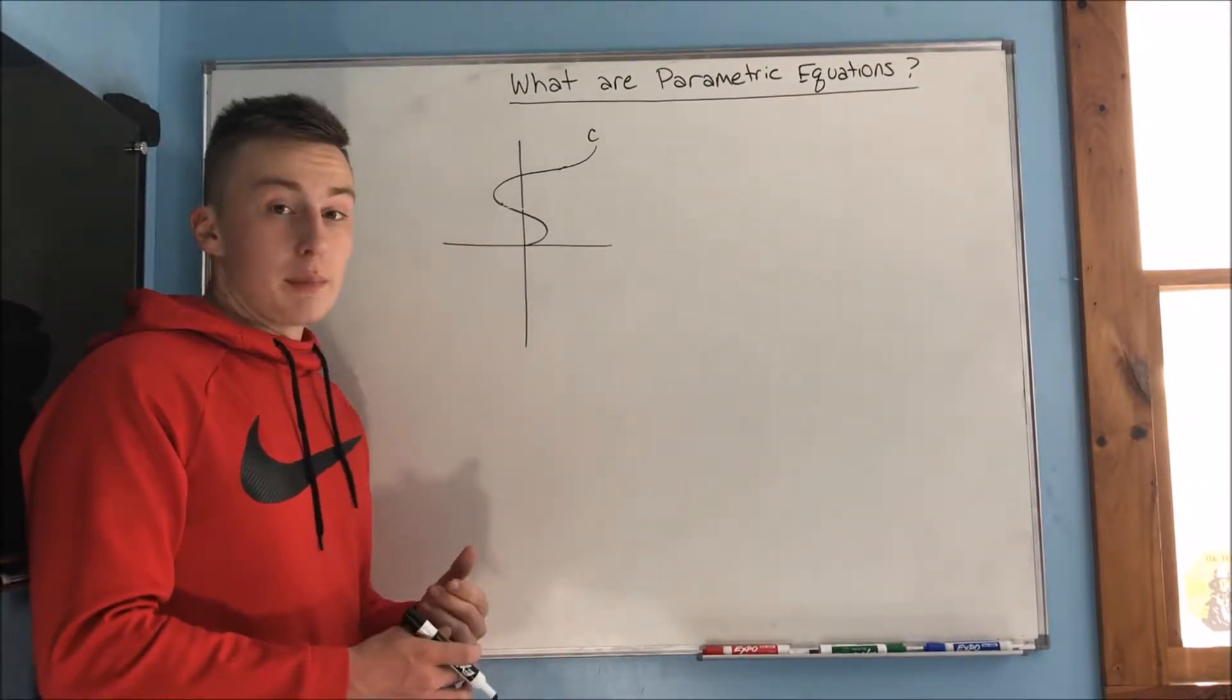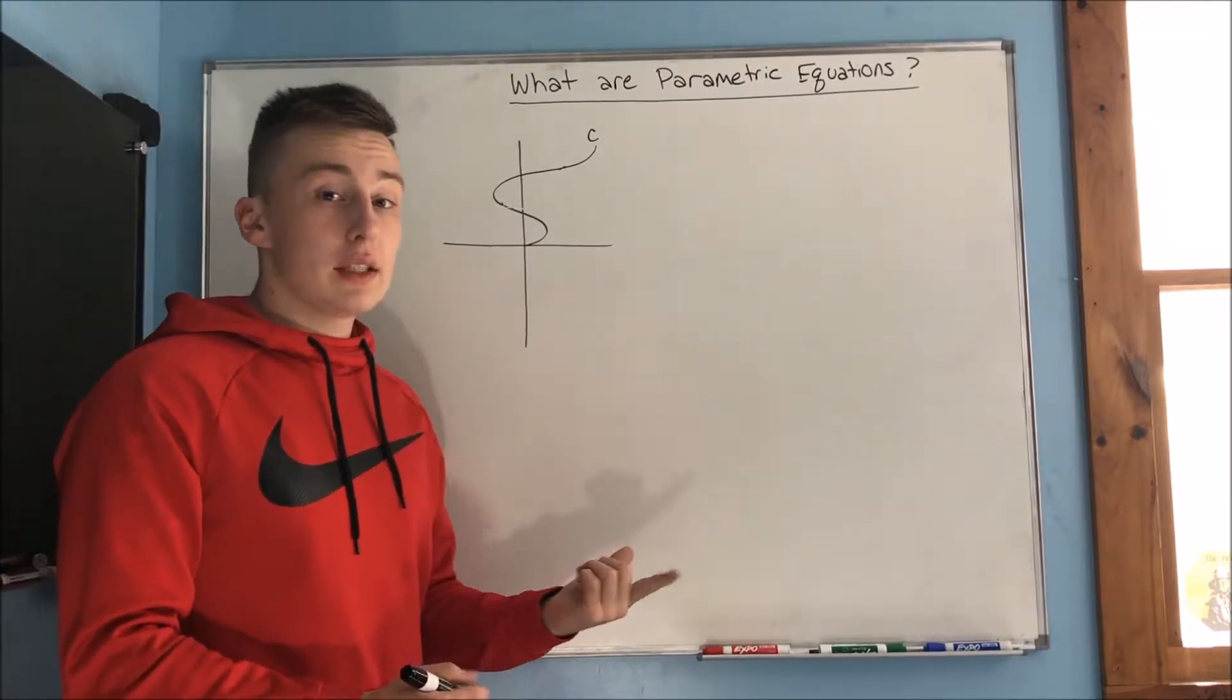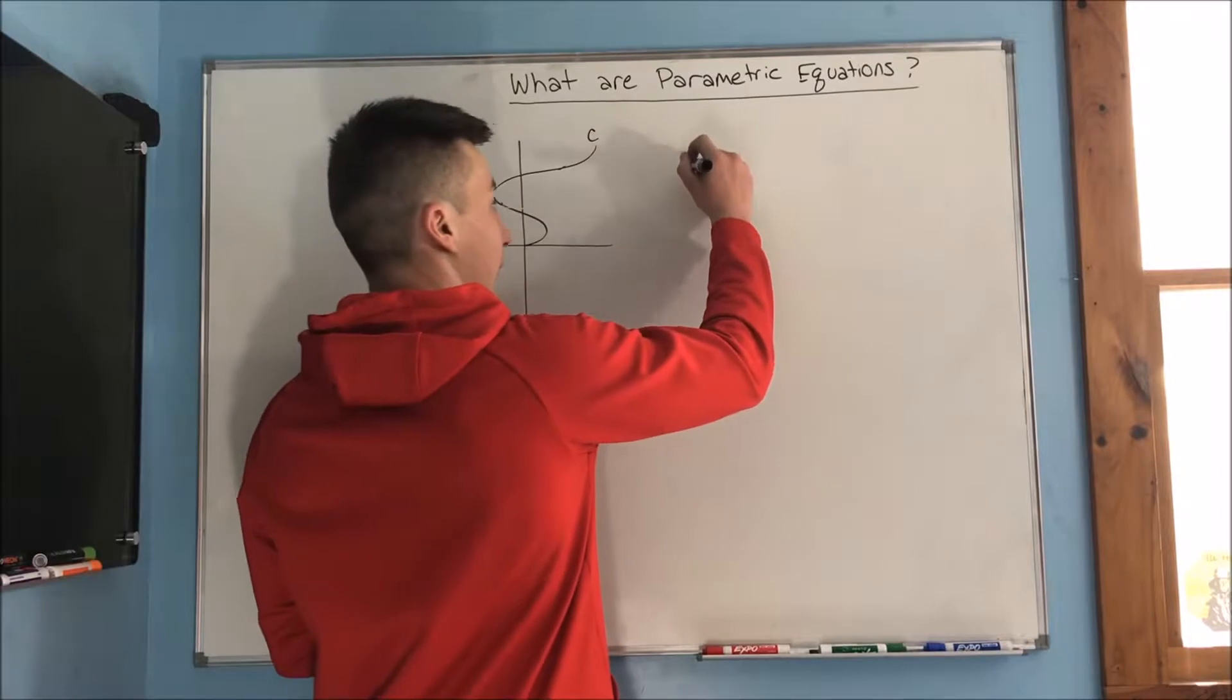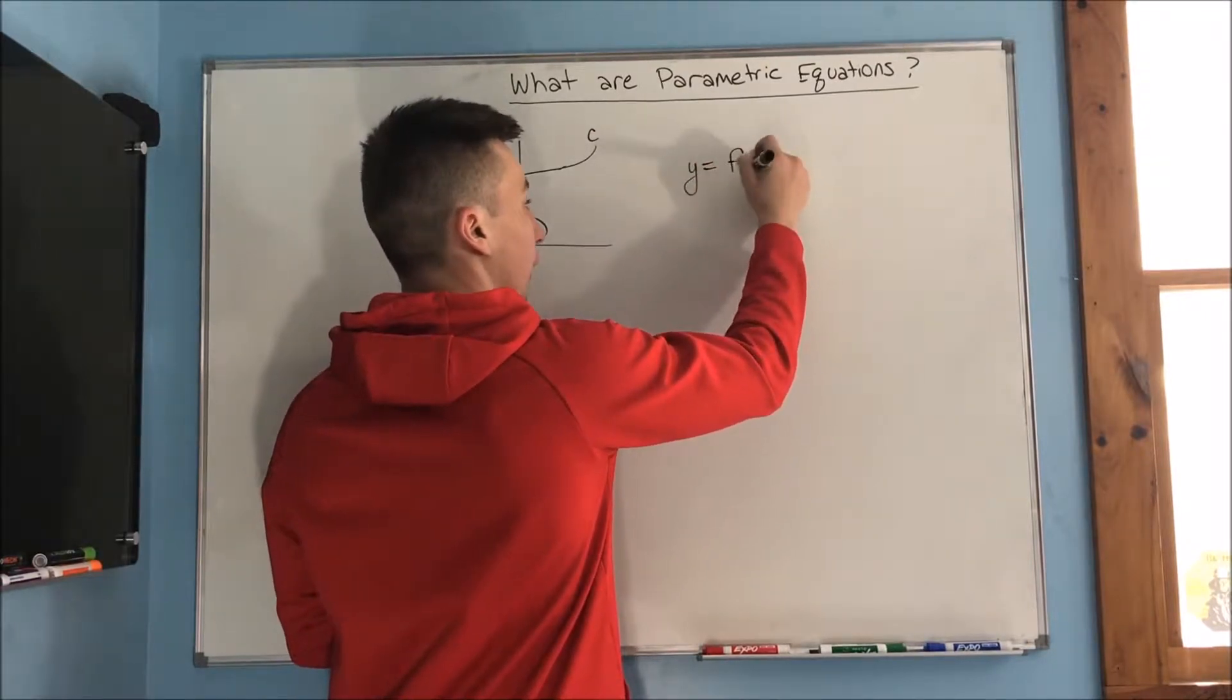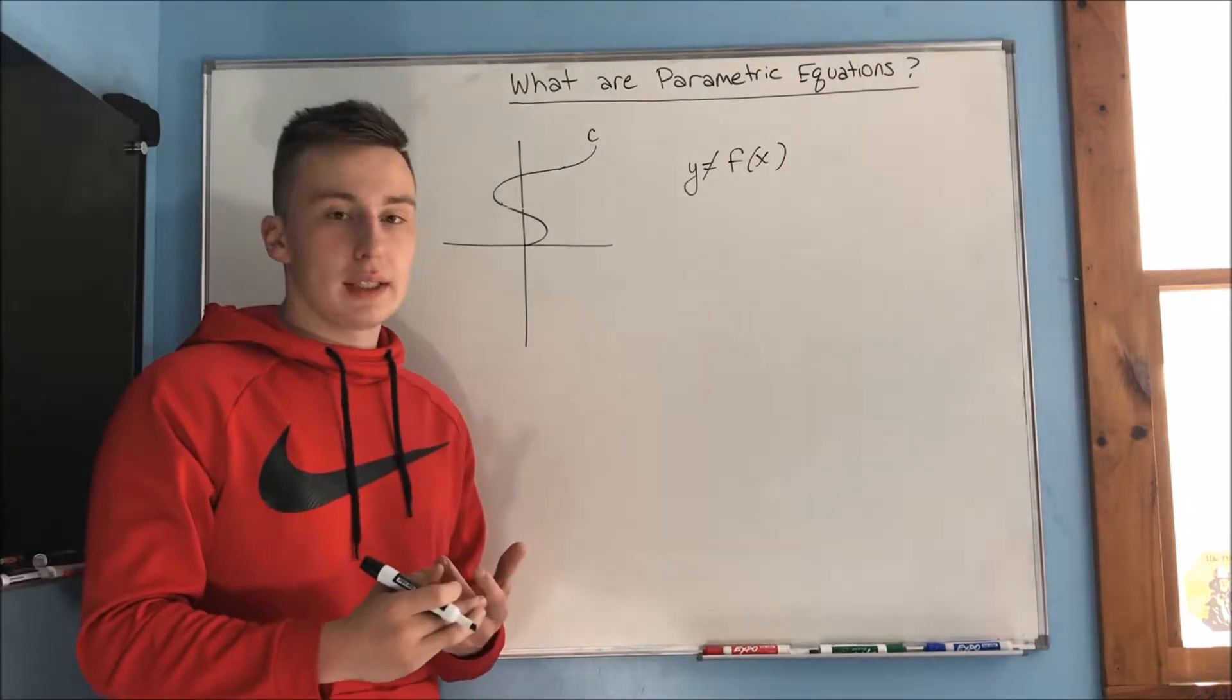So we have this curve C up here, and you'll notice that this curve does not pass the vertical line test, so we would not be able to describe this as y equaling a function of x, simply because it doesn't pass the vertical line test.